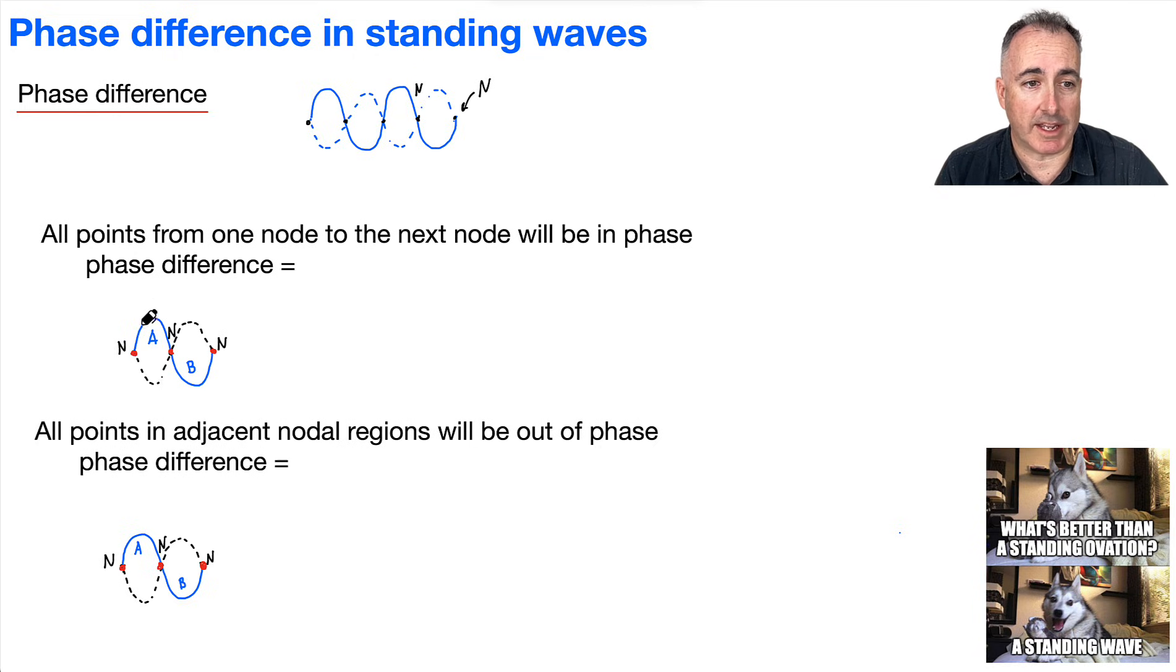So let's look at what happens then. If you're undergoing standing waves, for example, then all the points from one node to the next will be in phase. And what we say is the phase difference will be zero radians. When we say things are in phase, it means the phase difference is zero radians.